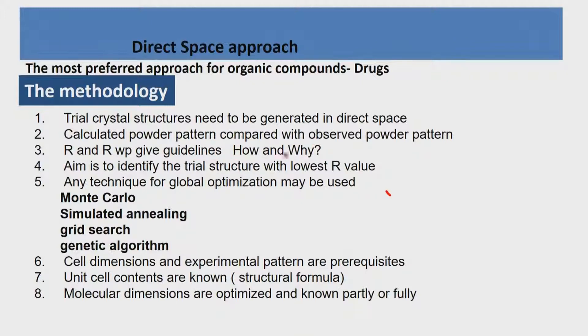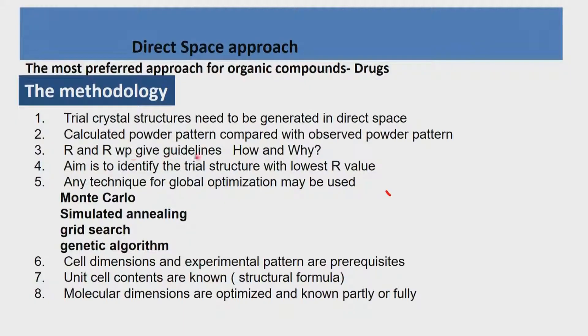We already know why Rp and Rwp are the signatures of the nature of your material — the fingerprints. Where the atoms are sitting and how the structure is developed decides the shape of the profile and where the reflections appear. Therefore Rp and Rwp give the guidelines, and the aim is to identify the trial structure with the lowest R value. This is known as an R-factor search.